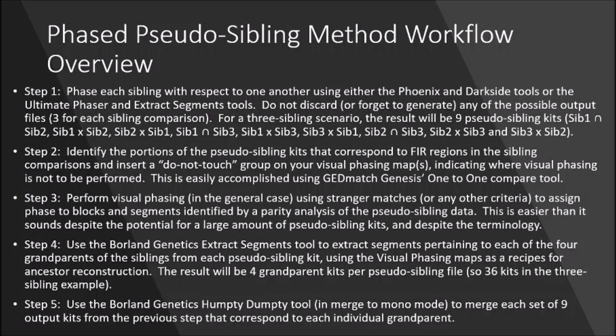Since there was a little lapse of time since I put this one out from the first one, I will just quickly review where we left off. We left off at step two, where we had inserted a Do Not Touch group in our visual phasing maps. I'd only created one map in the video, and we've got to make nine for each of the pseudo-siblings. I already did six or seven of those off camera, but I'm going to show you quickly how to make a couple more to show you some features in DNA Painter that might be useful.